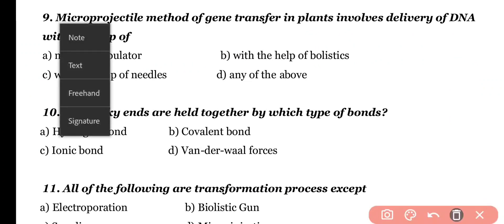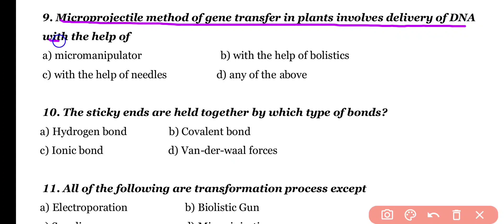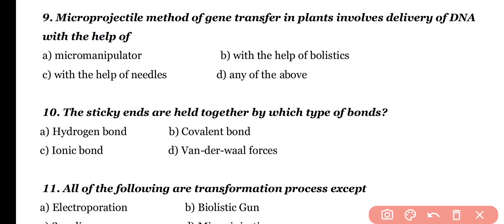Question 9. Microprojectile method of gene transfer in plants involves delivery of DNA with the help of: a micromanipulator, biolistics, or a needle. Correct answer is option B. The microprojectile method in plants works with the help of biolistics, using a particle gun.